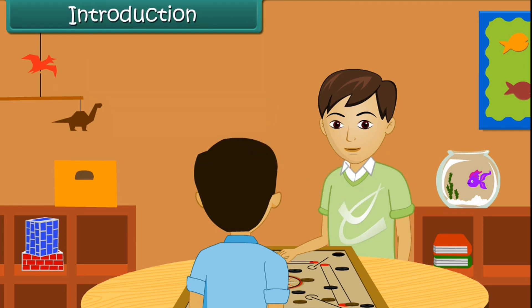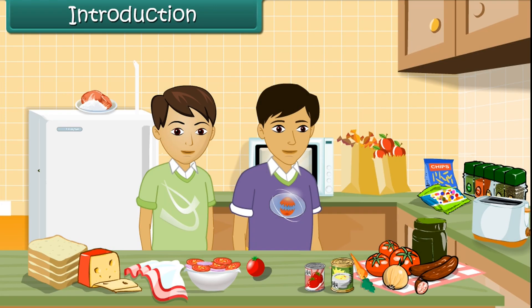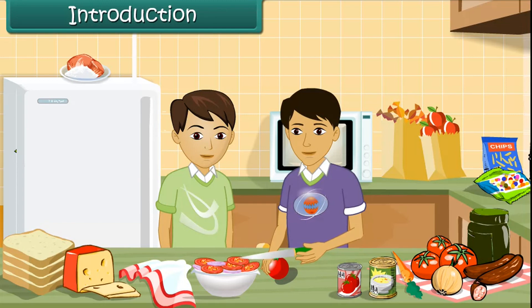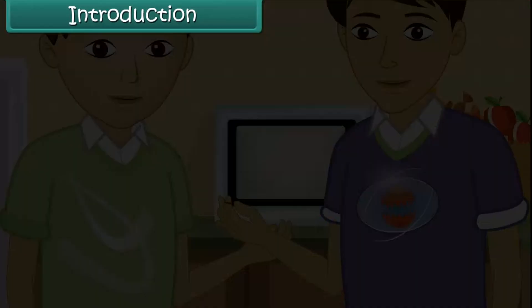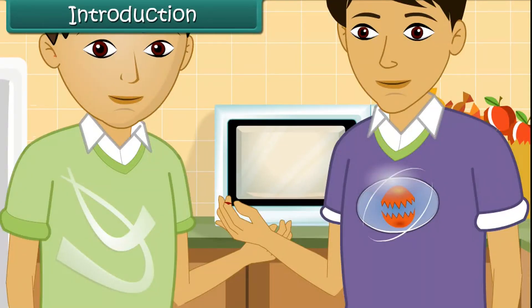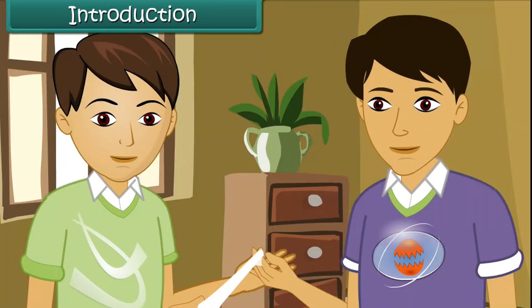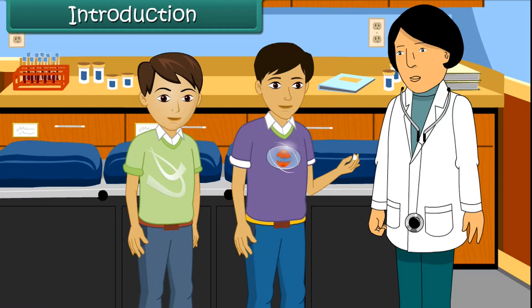Summer holidays have begun. Suresh is spending the day at Ram's house. Both the boys are alone at home and they are hungry. They decide to make sandwiches for themselves. Suresh starts slicing tomatoes and cuts his finger in the process. Ram cleans the wound and bandages it immediately, then takes Suresh to a doctor.